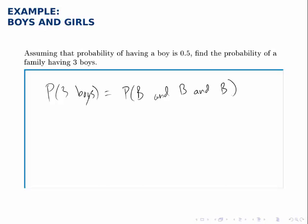These events are all independent. In other words, the first child has no effect on what the second child will be. The probability of these events all occurring together is the product of the individual probabilities.